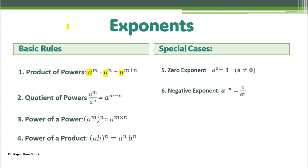When the base is the same, you can add the powers. It is m and n, so we can write it as m plus n. The dot means multiplication — so sometimes they write a power m multiplied by a power n, or simply write them side by side. Since the base is the same, we write the base once and add the powers.